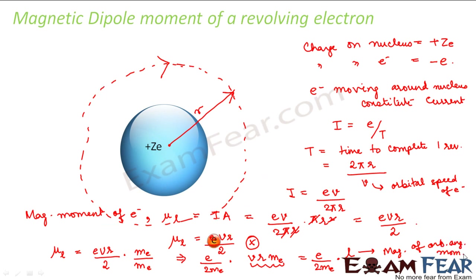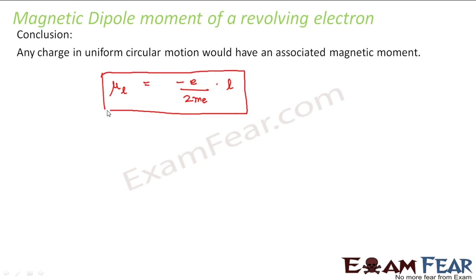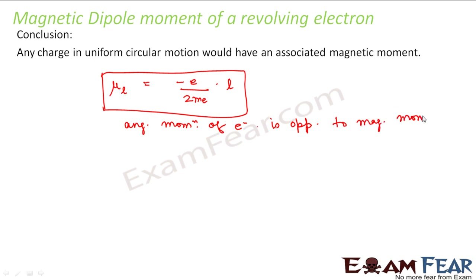Don't be worried by terms like orbital angular momentum — you would have studied these in chemistry. We observe that the orbital magnetic moment of the electron equals minus (e/2m_e) times L. This shows that the magnetic moment of the electron is in a direction opposite to the angular momentum. We conclude that any charge in uniform circular motion will have an associated magnetic moment.